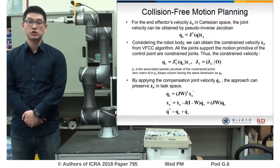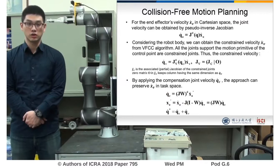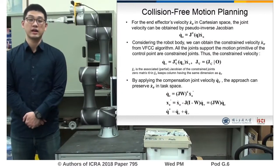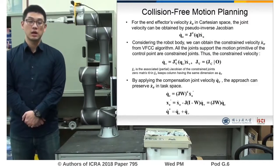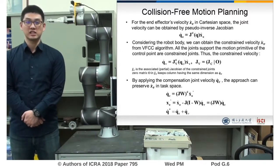Our approach generates joint velocities for the robot body to avoid collisions, while exploiting kinematic redundancy to preserve the desired end effector motion in task space by using other compensation joints. Let's see the experiment.